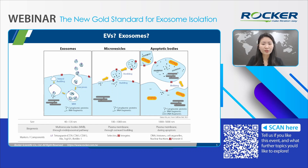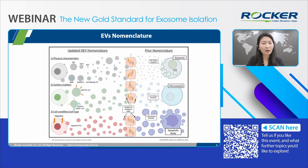The surge in exosome research followed their prominence in the 2013 Nobel Prize, leading to exponential growth in studies. However, research is often hindered by challenges like inconsistent terminology and experimental artifacts. To address this, the MISEV 2018 guidelines suggest that EV categorization should be based on physical characteristics, surface markers, cell condition, or cell type — for example, small EV or high-density EV, CD63-positive EV, or hypoxic EVs.